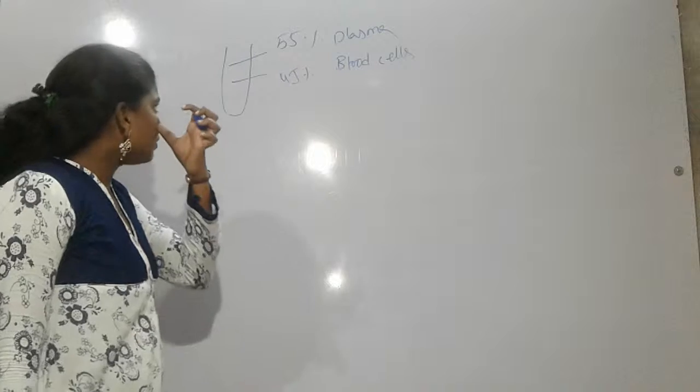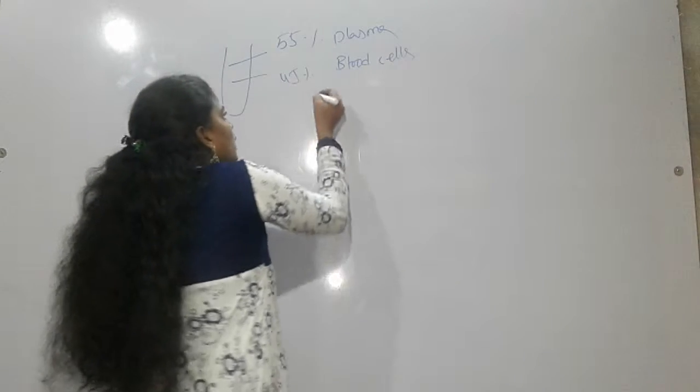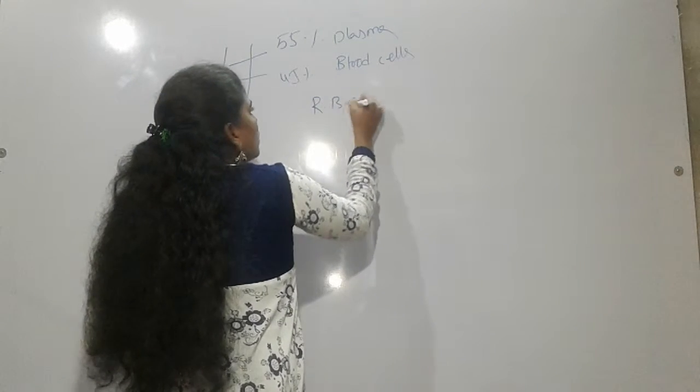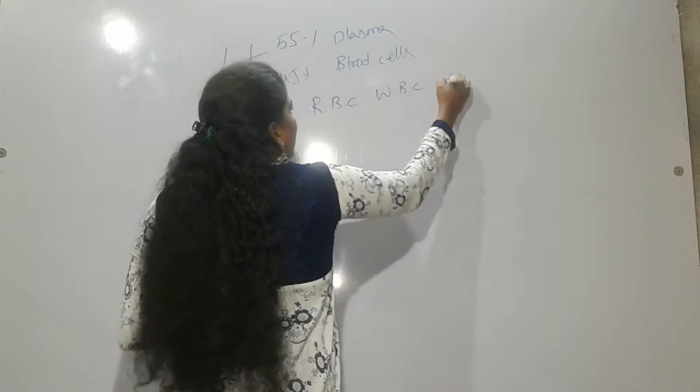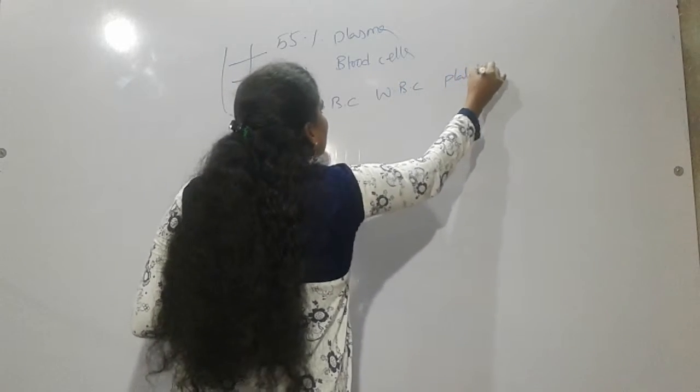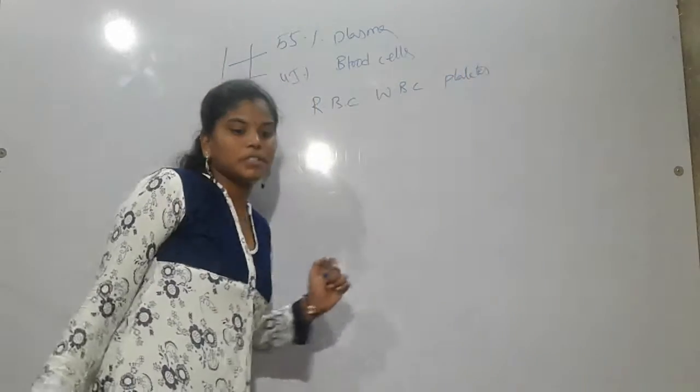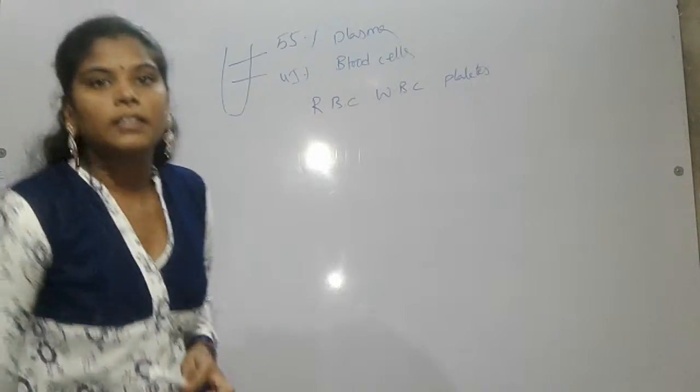We discussed about plasma and now we will discuss about blood cells. Blood cells: RBC, WBC and platelets. These are the major concepts. Now we will see about RBC.